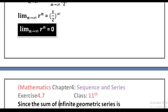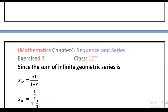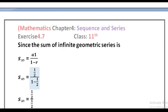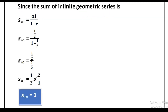Since the sum of an infinite geometric series is S∞ = a1 divided by (1 minus r), by putting the values: a1 = 1/2, divided by 1 minus r = 1/2. So 1 minus 1/2 = 1/2, giving us (1/2) divided by (1/2), which equals 1. So S∞ is equal to 1, which is the required solution.